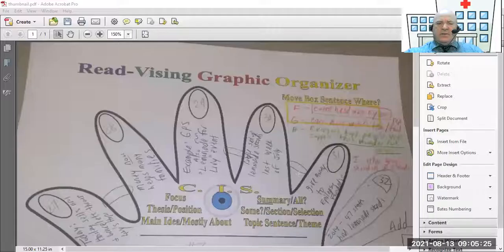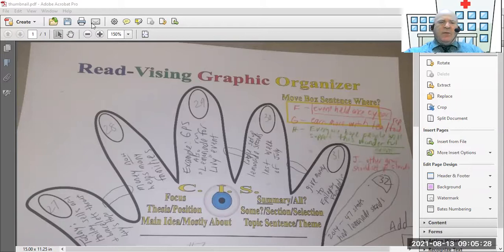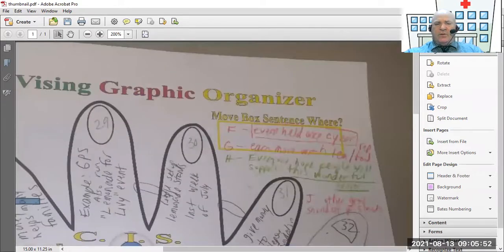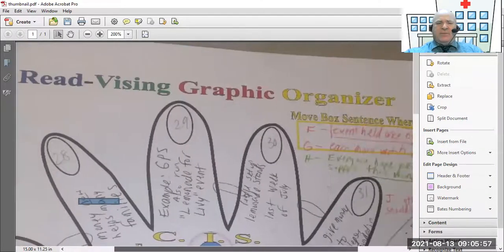Let me show you the graphic organizer first. There it is. It's called the read-vising. What I went ahead and did since I'm having trouble with my document camera, if you haven't heard, I dropped it like two or three times going into a training.